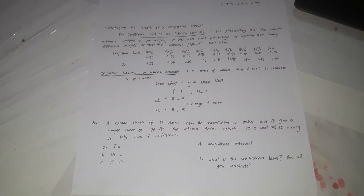We are going to identify the lens of a confidence interval. The confidence level of an interval estimate is the probability that the interval estimate contains a parameter. It describes what percentage of intervals from many different samples contain the unknown population parameter.